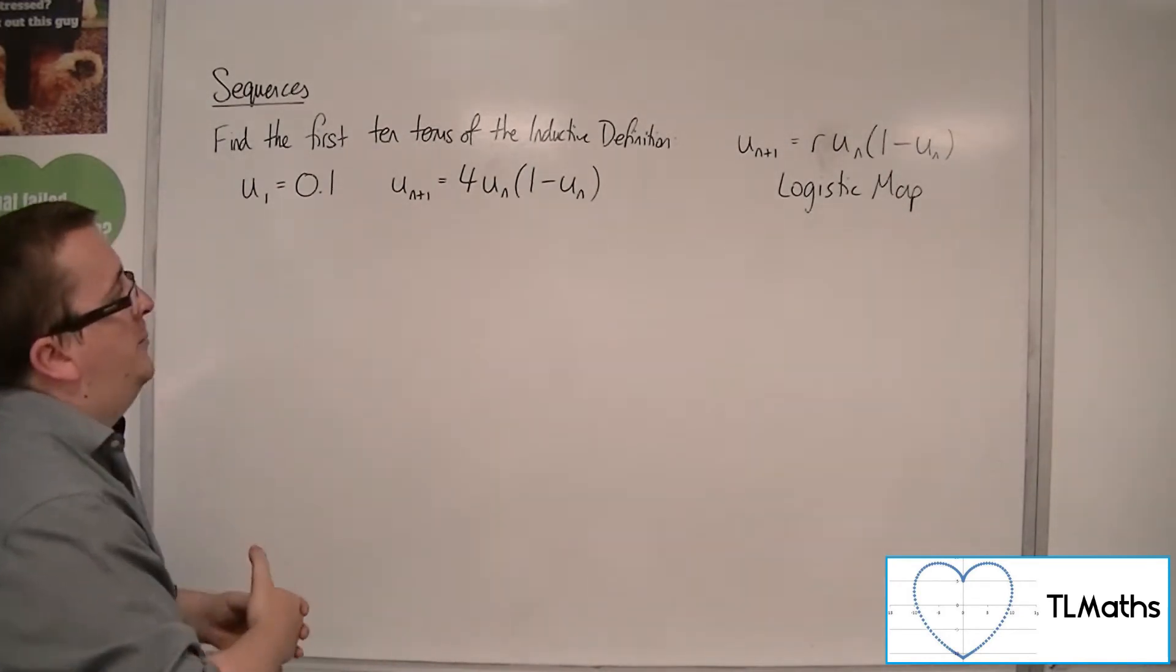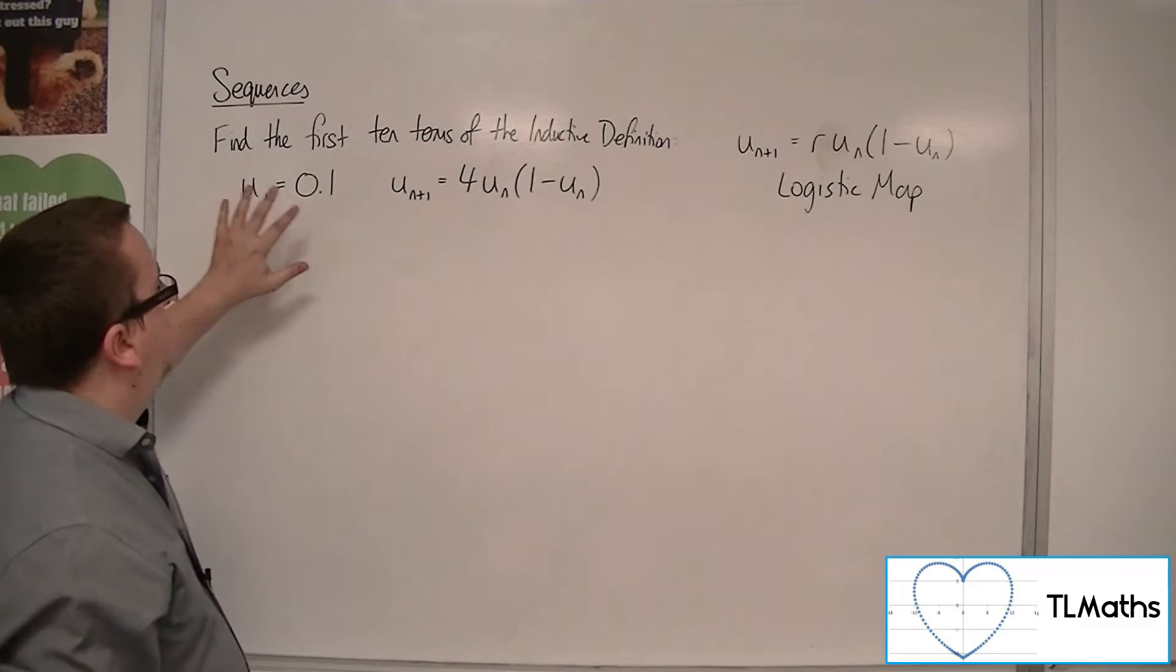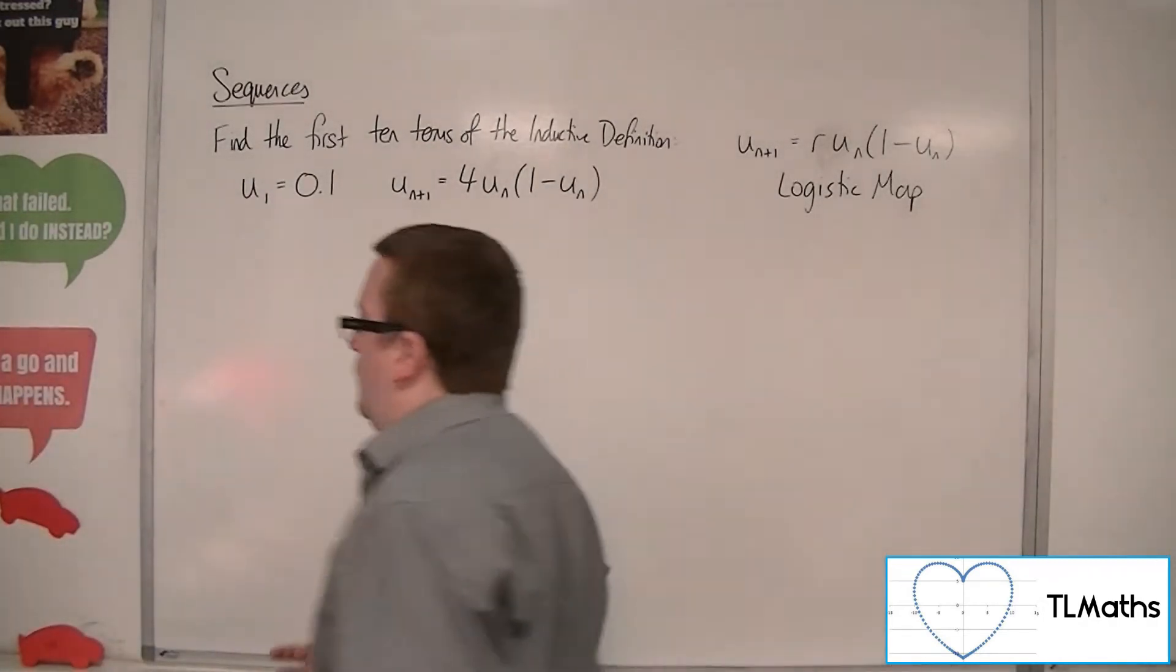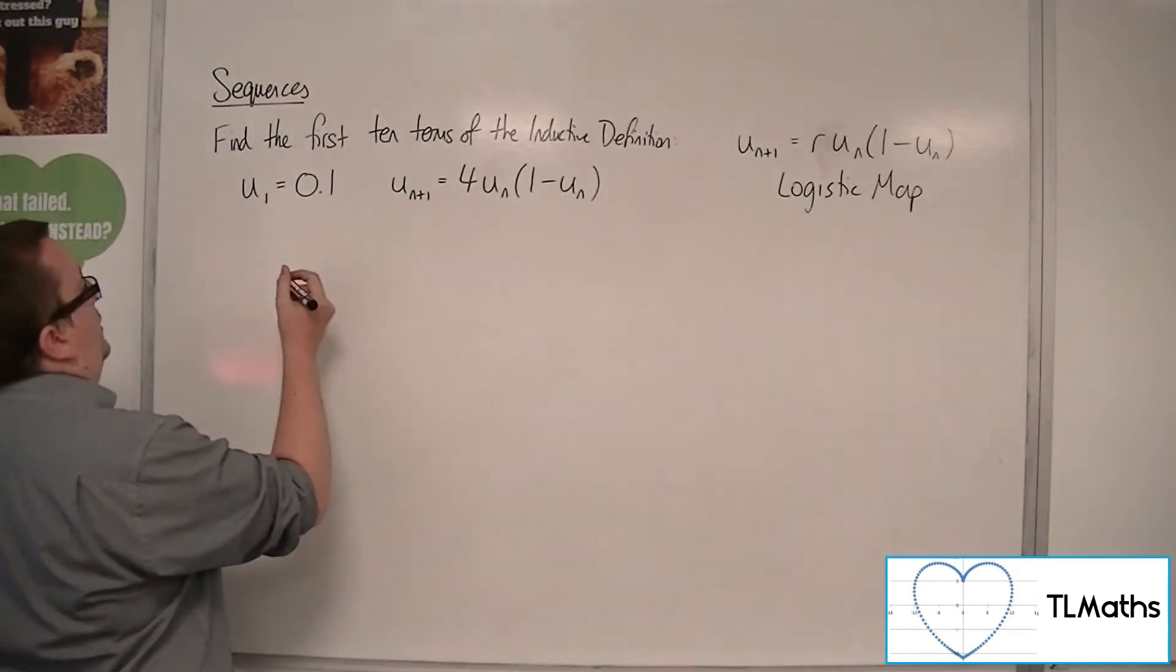I've chosen R to be 4 in this case. I've got a starting value of U1 equals 0.1. So let's see what our next value is going to be.